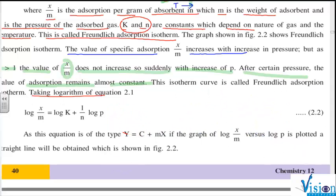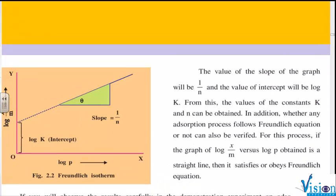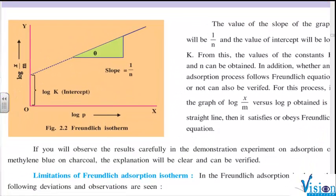By taking logarithm, we got this equation: log of x by m equals log of k plus 1 by n log p. It has been compared with y equals c plus mx. Horizontal axis has log p, vertical axis has log of x by m. c will be your intercept and 1 by n will be your slope. And the graph is plotted over here in a very neat and clean manner.